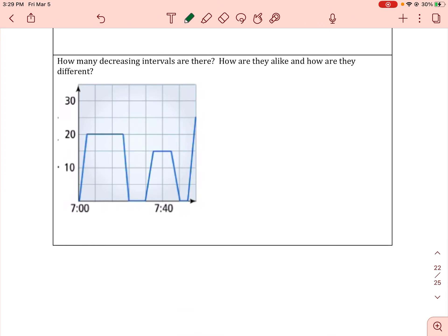How many decreasing intervals are there? There are one and two decreasing intervals. How are they alike? They all end at 0.